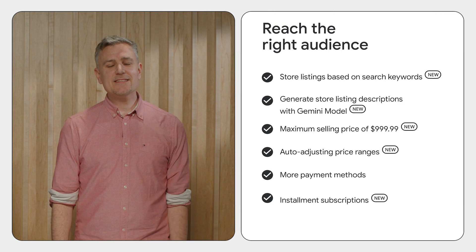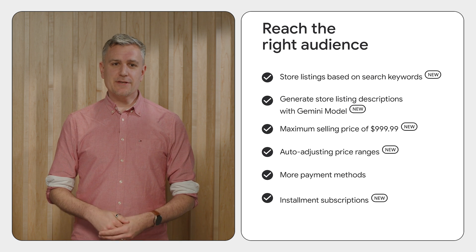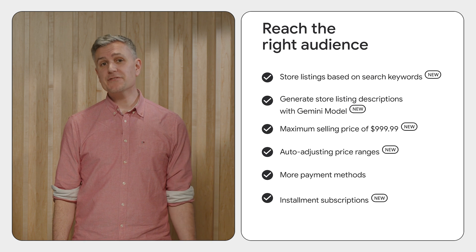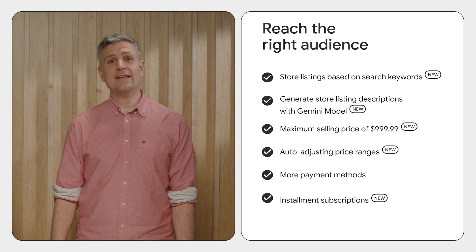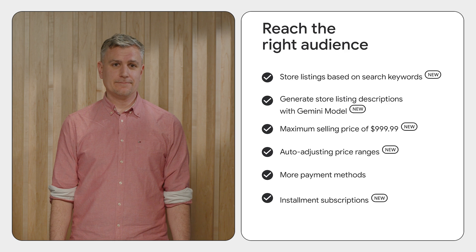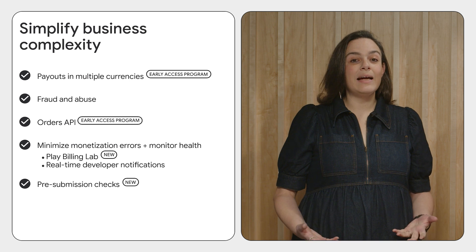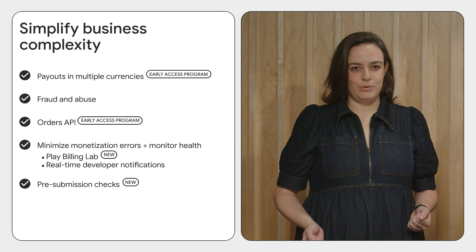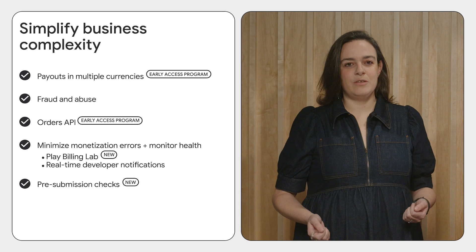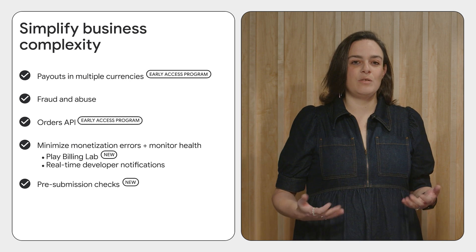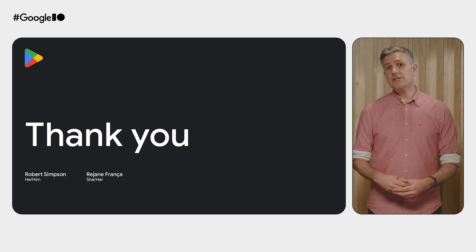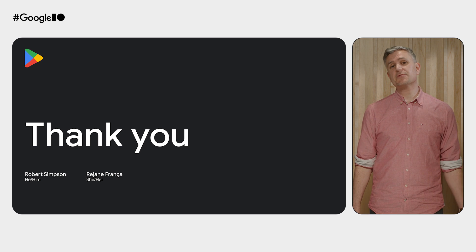Let's summarize what we covered. When reaching your audience, you can tailor your message to different users with custom store listings, unlock the power of Gemini to help you write store listings quickly and easily, and use one of many pricing tools to enable the right price point for a given user. You can simplify business complexity by relying on Play's fraud and abuse controls and real-time monitoring tools. Play is committed to being the best partner for your business when it comes to growing or monetizing your user base, as well as being a place where you can publish and distribute your app with confidence. To learn more about all these updates, be sure to check out the blog post and the resources linked in the description below.